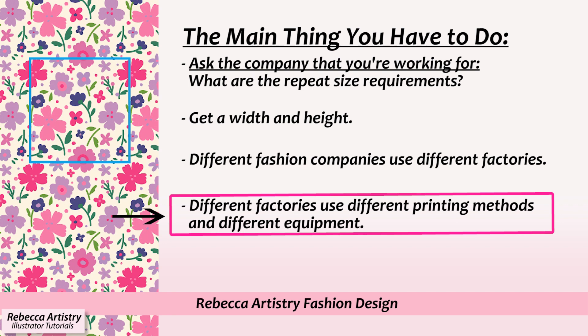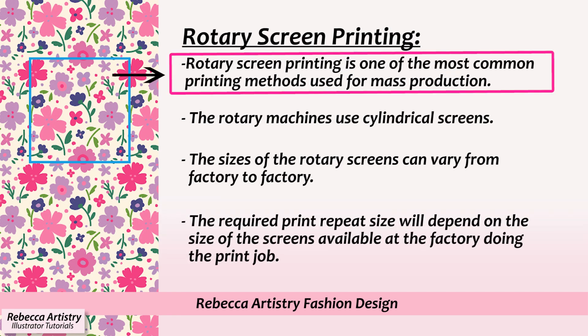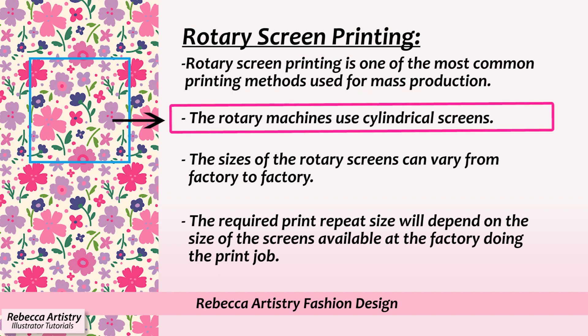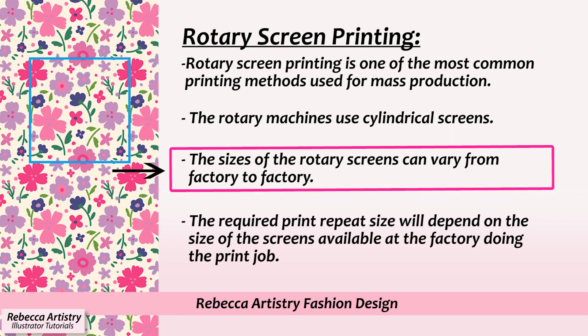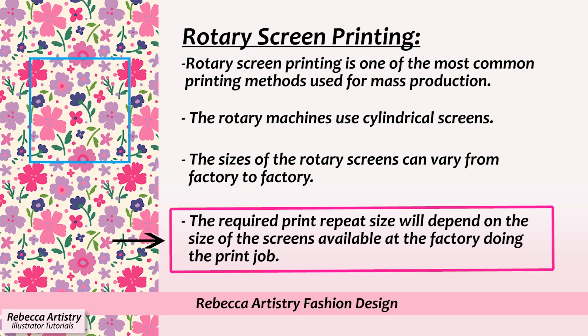One factory's requirement may be different than another factory's requirement based on the machinery that they use — that's what I meant by technical reasons. One of the most common printing methods used in mass production of prints is rotary screen printing. The machines have cylindrical screens, and those screens don't only come in one size. The size of the screens on those machines can vary from factory to factory, so it only makes sense that you would need to ask.